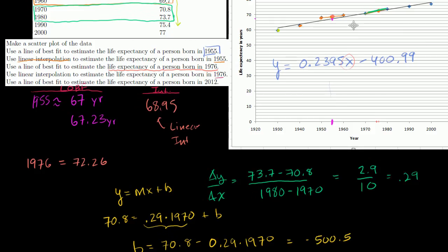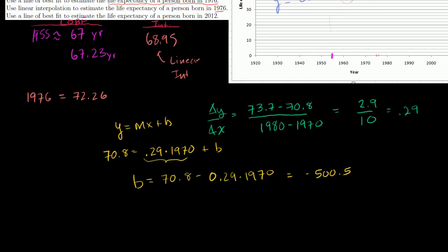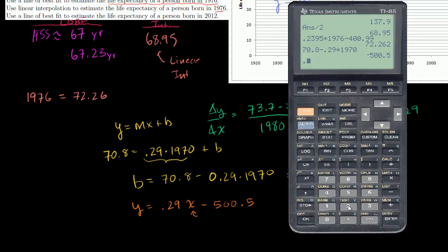So the equation of our interpolation line, remember, we're just finding the equation of this line between 1970 and 1980, is y equals 0.29x minus 500.5. Now, if we want to figure out what that line, if we want to interpolate 1976, we just have to put 1976 in there for x. So what is life expectancy of 1976?